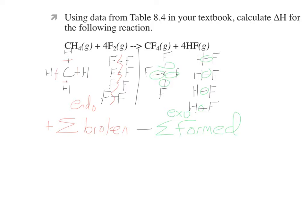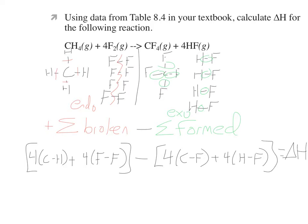Broken minus formed. When we do it in this order, the broken ones, since they come first, all bond energies are positive, because these are endothermic. And when these come together, these are exothermic on this side, so that negative sign distributes and means all of those are negative energies coming out. So we just keep track of all the different types of bonds. Here we have four separate CH bonds, plus four separate FF bonds.